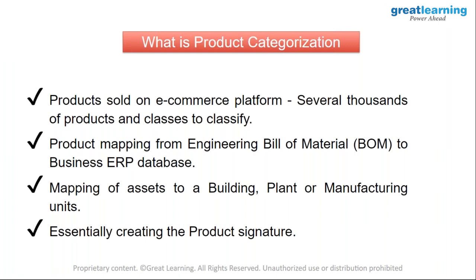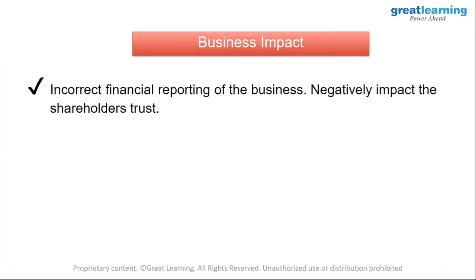When we categorize a product, we essentially create a signature of a product — how we can traverse data points to reach a product definition. The business impact is clear: in an e-commerce setup, good categorization leads to a good shopping experience. In the engineering-to-business data mapping setup, it's critical because if the business data is not right, your financial reporting won't be right, and you won't be giving correct numbers to your shareholders and customers.